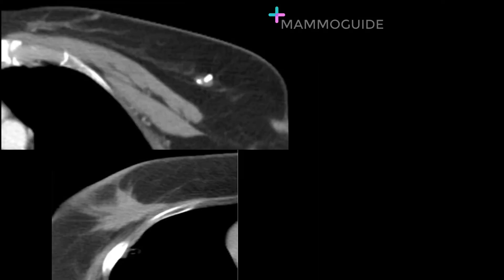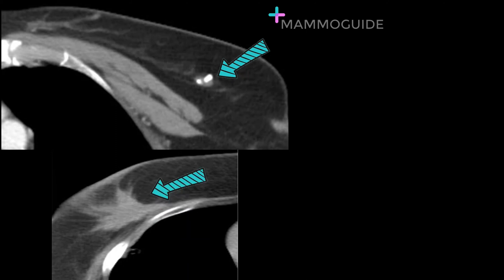Another patient was sent for diagnostic mammography evaluation based on "suspicious calcifications" and a "spiculated mass" within the breast. Here are the supposed suspicious calcifications, and here is the spiculated mass.